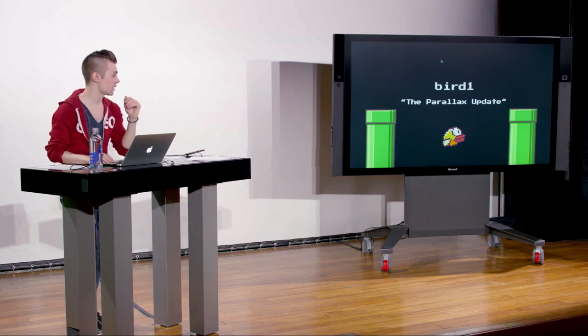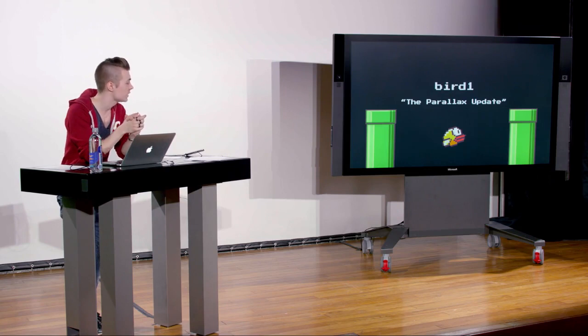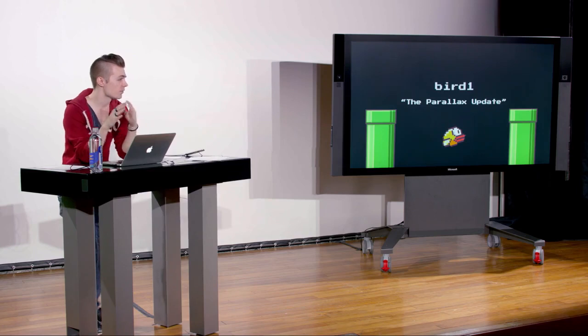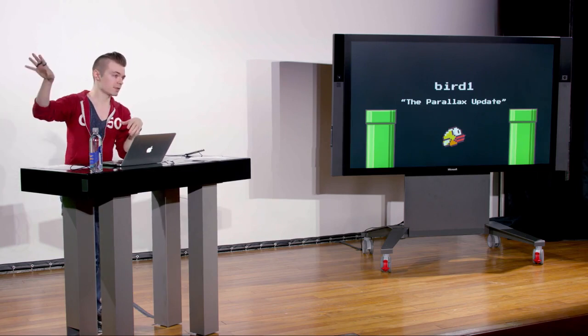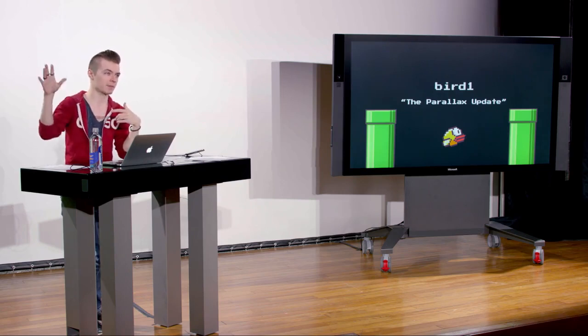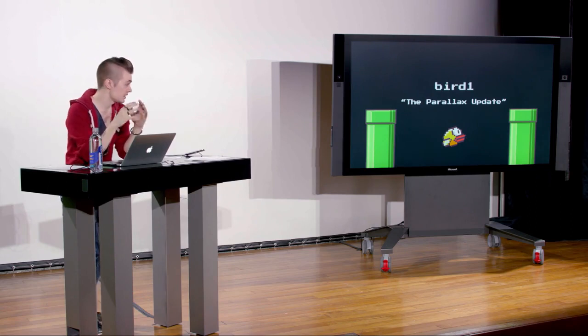Bird 1 is the parallax update. Parallax scrolling is an important concept in 2D game development — it refers to the illusion of movement given two frames of reference moving at different rates. If you're driving on the highway, you see a fence next to you and mountains in the distance: the mountains move much more slowly than the fence. We accomplish the same illusion in our game using this graphical trick.